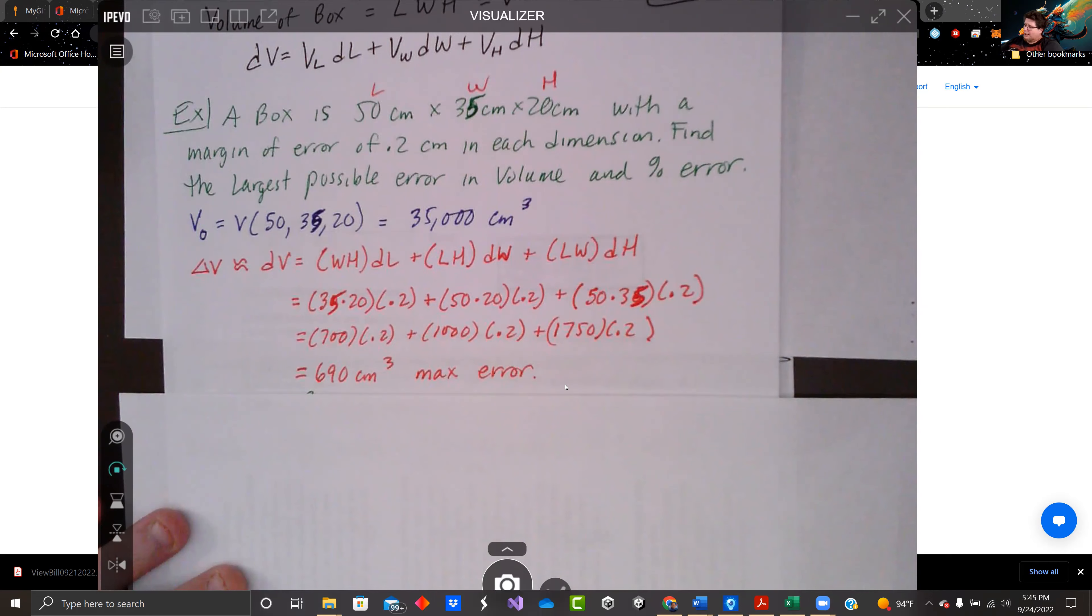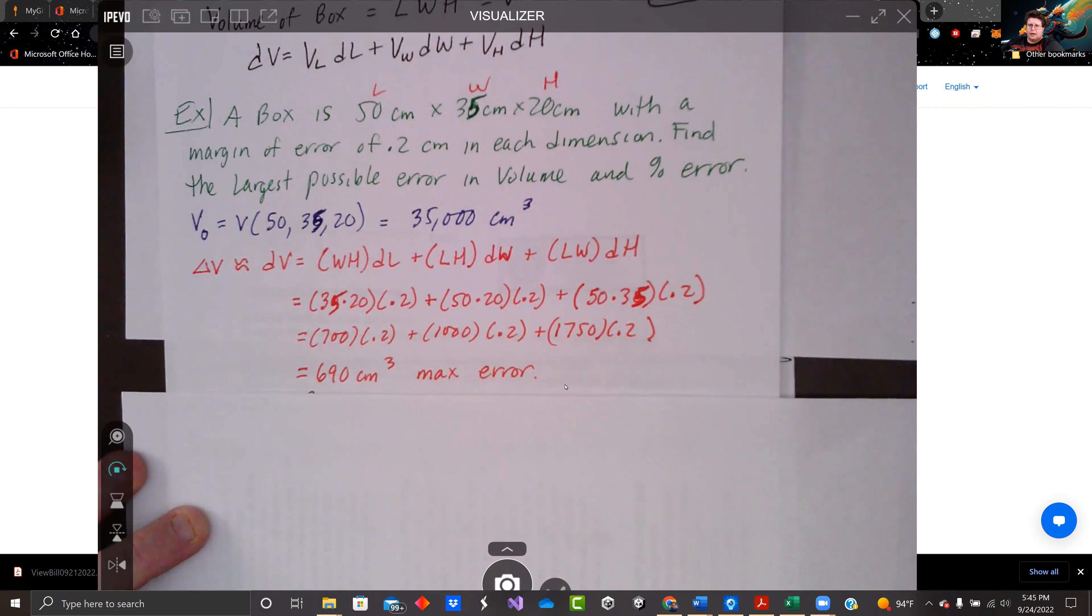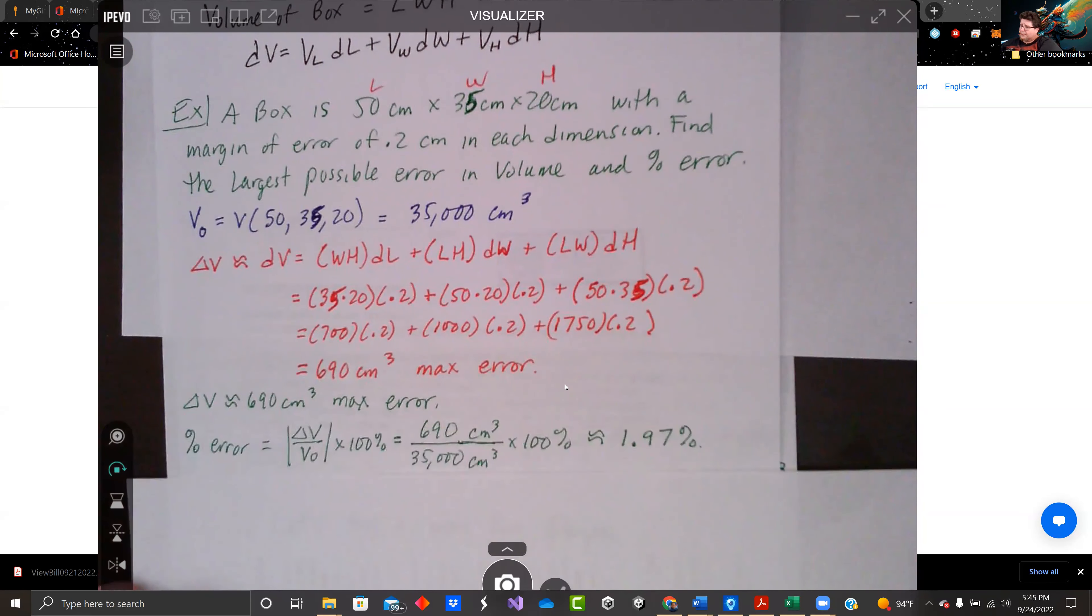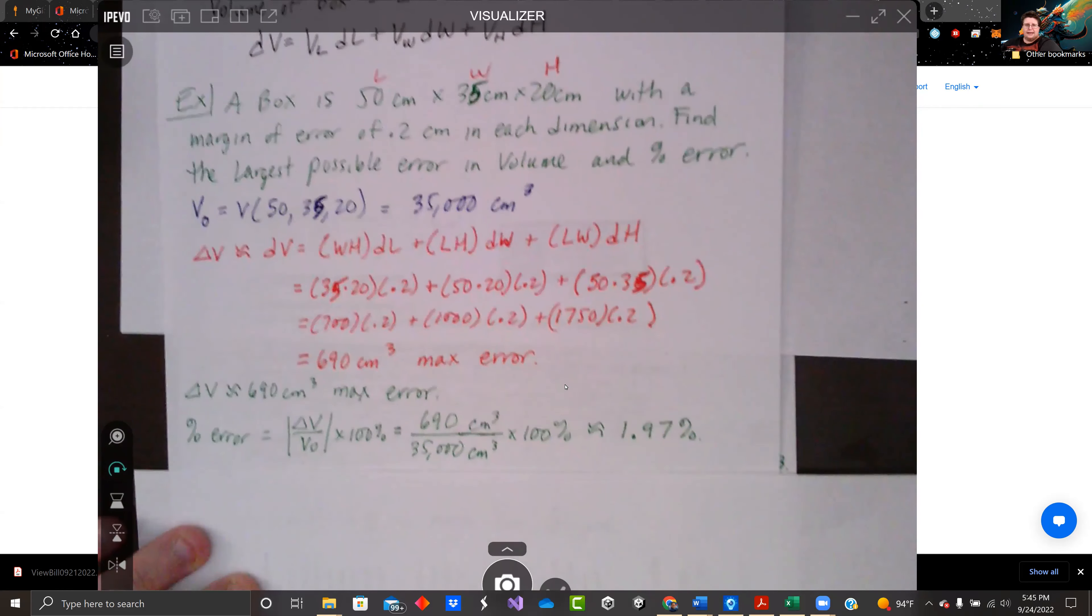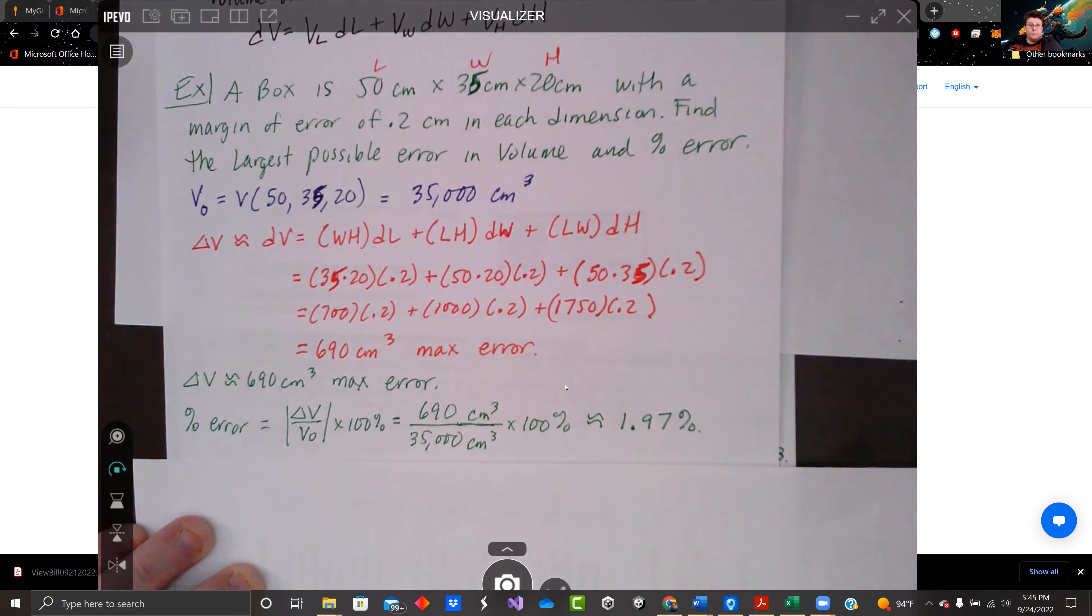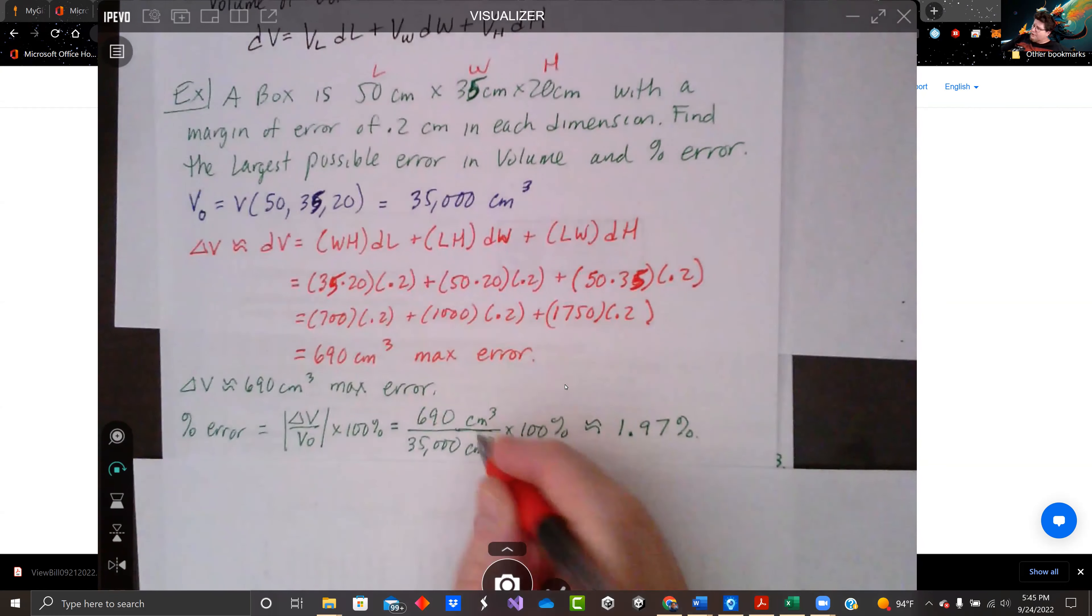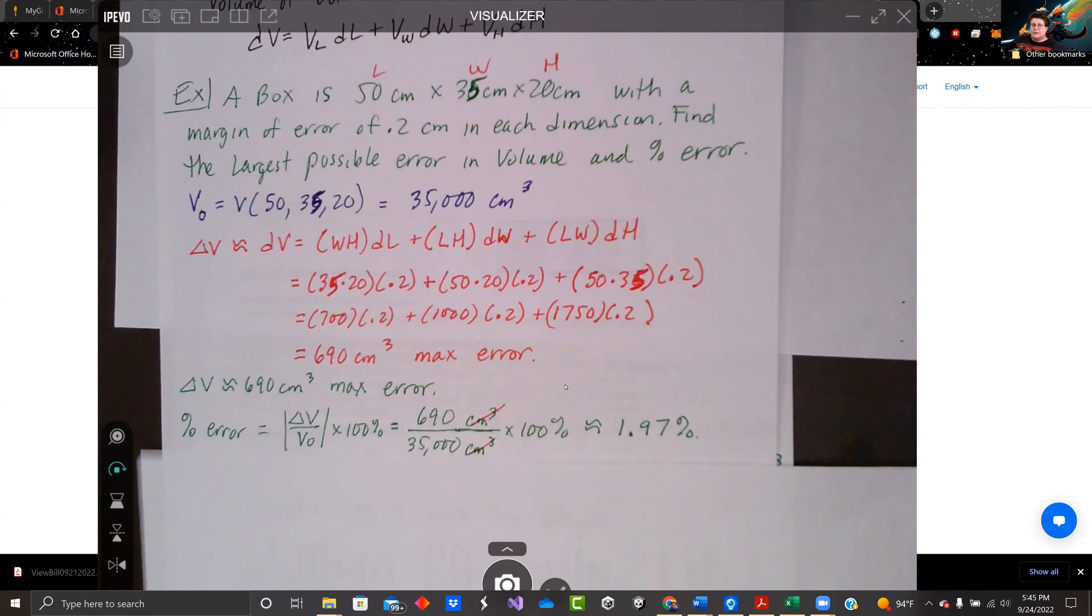And that'll be our maximum error. So the box should have been 35,000, it could be 35,690. So it could be a little bit bigger. Why would you care? If you're packing stuff and you are paying by how much is in there, that extra 690 cubic centimeters you might think that's a lot. But if you look at it as a percentage of the total error, the way you would do that is taking the actual error dividing by the actual volume, multiply by 100. The percentage error here is 690 cubic centimeters over 35,000 cubic centimeters.